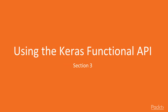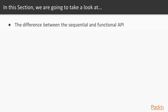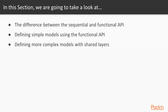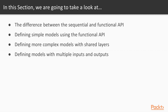Welcome to my third section, using the functional API. In this section I'm going to explain the difference between the sequential and functional API, defining simple models using the functional API, how to define more complex models using shared layers with the functional API, and finally how to define complex models with multiple inputs and outputs using the functional API.